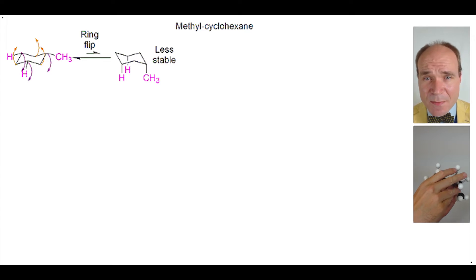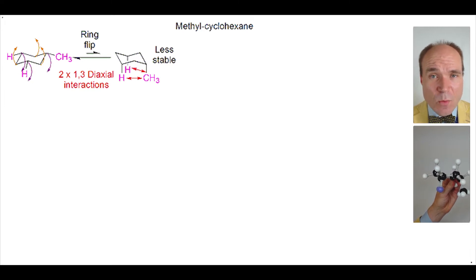This type of steric strain is called 1,3-diaxial interaction. And there are two 1,3-diaxial interactions in this molecule. This means that the chair conformation with the methyl group in the equatorial position is more desirable due to its lower energy than the chair conformation where the methyl group is in the axial position.